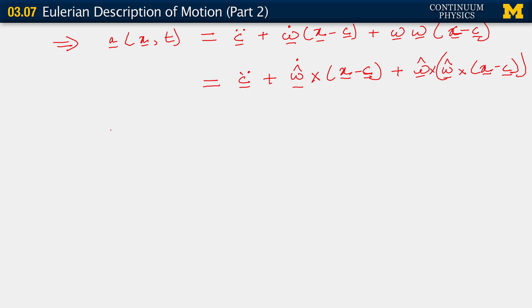Note that again, c double dot is the translational acceleration. What is omega hat dot? Think about it, what is omega hat dot? It is the angular acceleration. And the last term, which is given to us by omega hat cross omega hat cross x minus c.